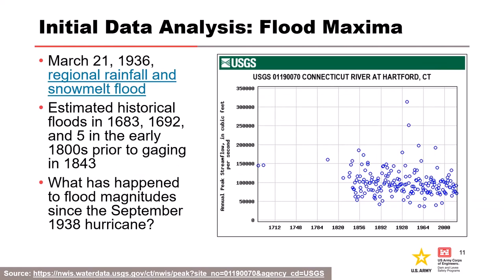It almost looks like there's a slightly lower trend, but also if you look at the latter half of the period of record versus the former, the variance is a lot higher too. The spread and flow events you're seeing have a much greater range going on. So there could be some potential issues with non-stationarity in this data set.